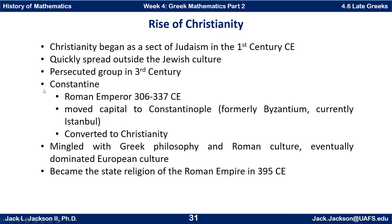We should also mention the rise of Christianity. Christianity began as a sect of Judaism in the first century of the Common Era, but quickly spread outside Jewish culture. By the third century, Christians became a persecuted group in the Roman Empire, mainly because they refused to acknowledge the emperor as divine. But by the time of Constantine, who was Roman emperor from 306 to 333 of the Common Era, things had changed.